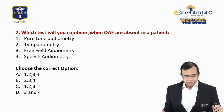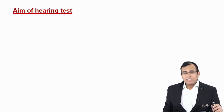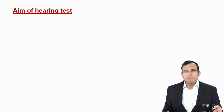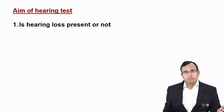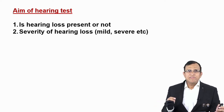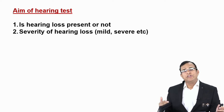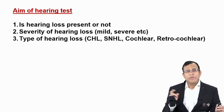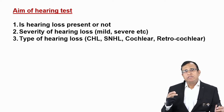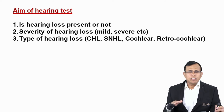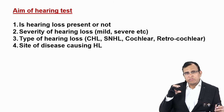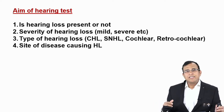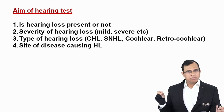The basic aims of any hearing test are four: first, to know whether hearing loss is present or not; second, the severity (mild, moderate, severe, profound); third, the type of hearing loss — conductive or sensorineural, and sensorineural is further divided into cochlear and retrocochlear; fourth, the site of the lesion — which part of the auditory pathway is causing the hearing loss.